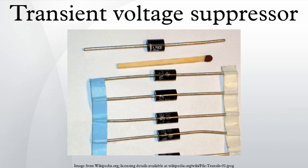A transient voltage suppressor or TVS is a general classification of an array of devices that are designed to react to sudden or momentary over-voltage conditions. One such common device used for this purpose is known as the transient voltage suppression diode, which is simply a Zener diode designed to protect electronic devices against over-voltages. Another design alternative applies a family of products known as metal oxide varistors, which protect electronic circuits and electrical equipment.